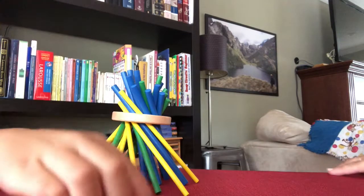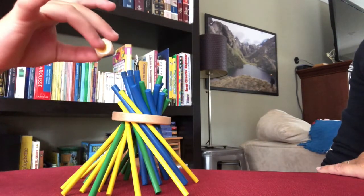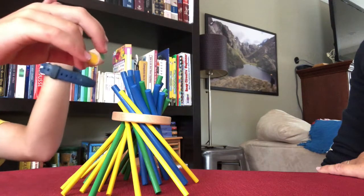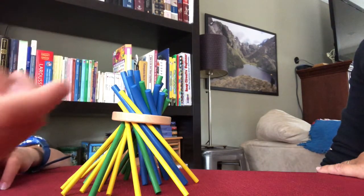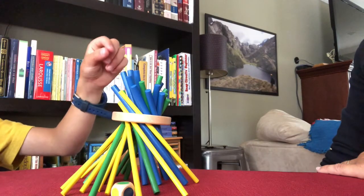And then how you play is you roll the dice, and whichever color it lands on, you take that stick out. So for an example, if I landed on green, I would take a green out.